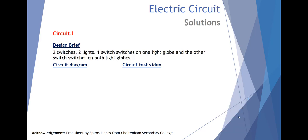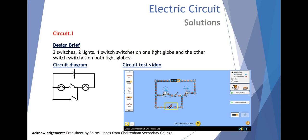Circuit I, two switches, two lights, one switch switches on one light globe and the other switch switches on both light globes. If we close the bottom switch, one globe goes on. If we close the top switch, two globes go on.